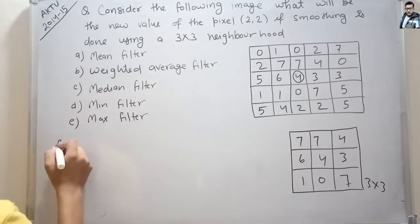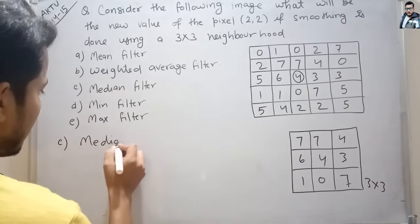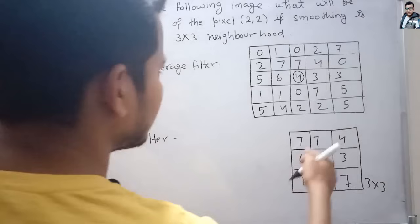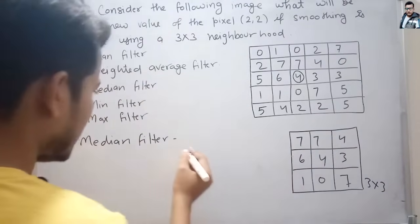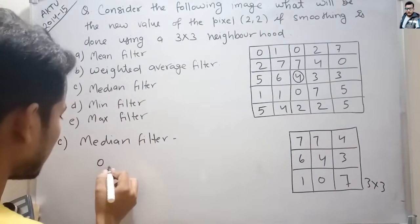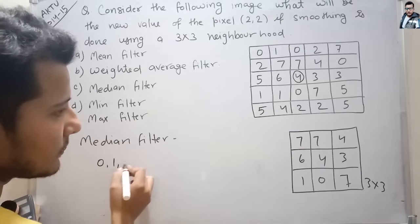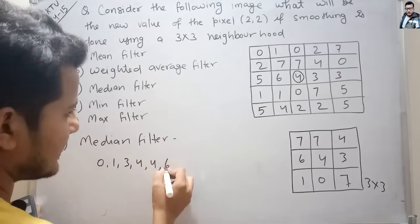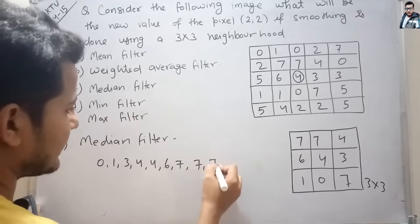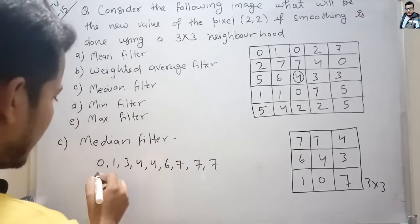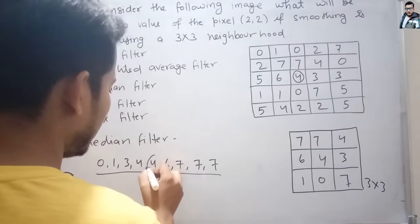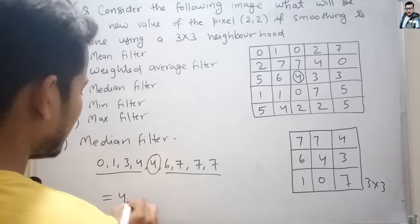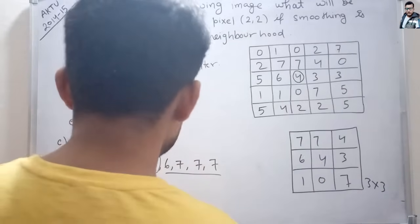The third filter is the median filter. In the 3x3 neighborhood, arranging all pixel values in increasing order: 0, 1, 3, 4, 4, 6, 7, 7, 7. We have 4 values on each side of the middle, so the median value is 4. By applying the median filter, the value of this pixel is 4.